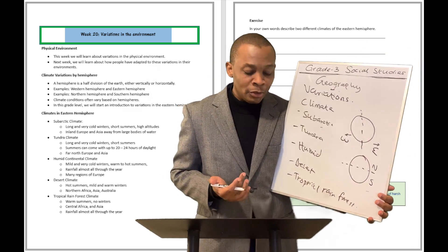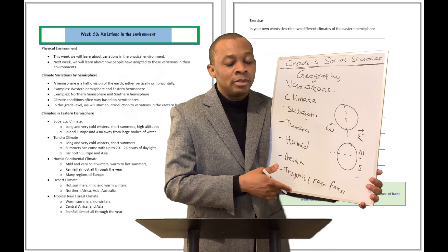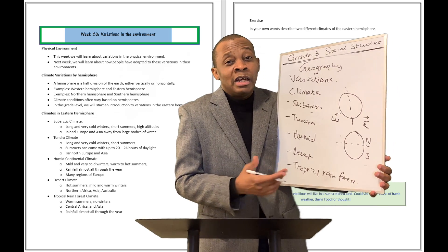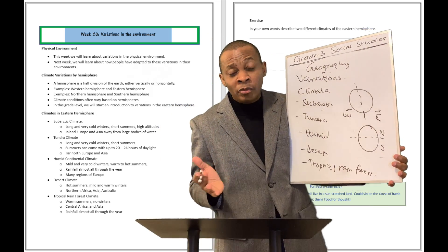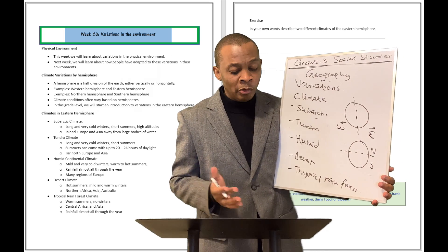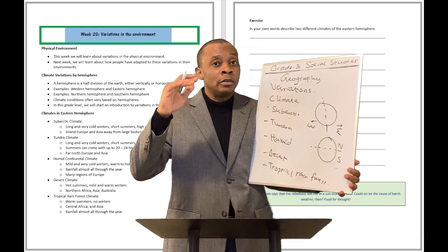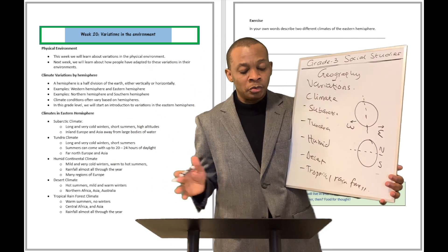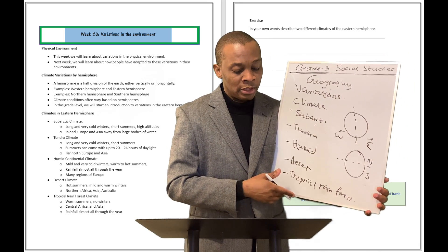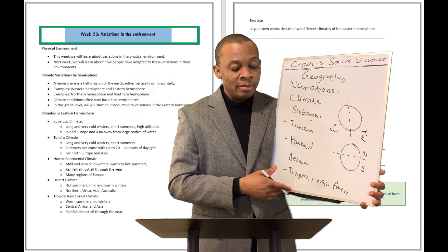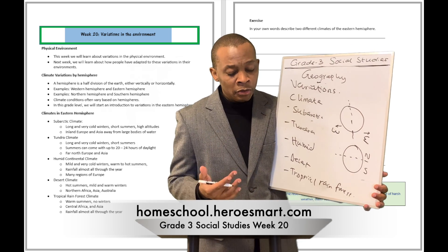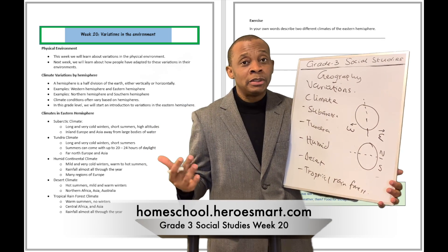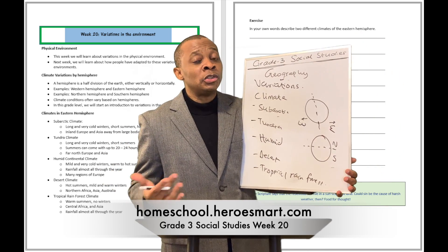The desert climate is characterized by hot summers and mild, warm winters — not cold winters, just really warm winters. Those places include northern Africa, some parts of Asia, and Australia. The tropical rainforest climate includes warm summers and no winters. Central Africa and Asia are places where this kind of climate is found.